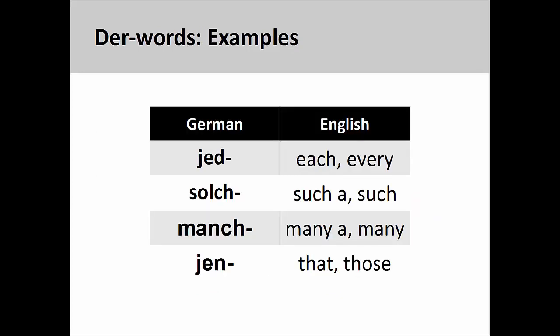There are several different der-words in German. Some of the more frequently used include jed- (each, every), solch- (such), manch- (many), and jen- (that, those).